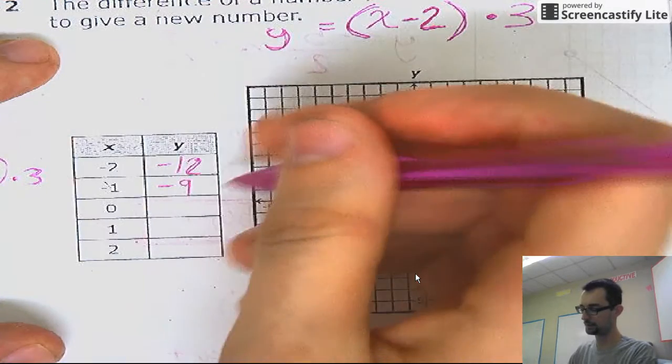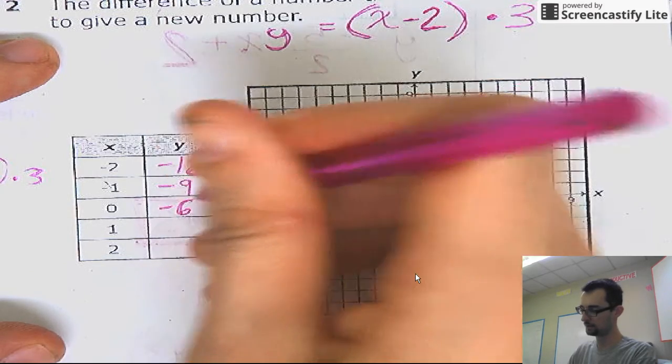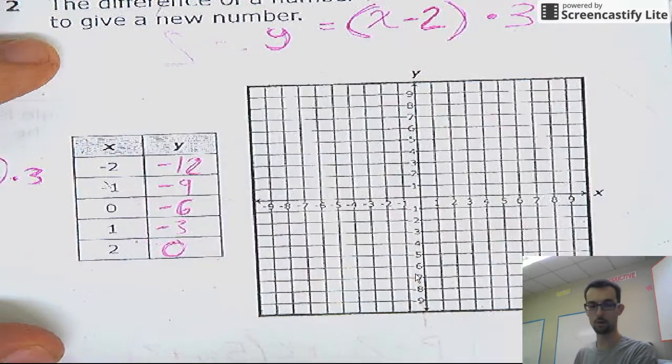So I'm going to do that. Instead of plugging them in and see what it is, I'm just going to add three. Negative nine plus three is negative six. Negative six plus three is negative three. Negative three plus three is zero. Bam. Done.